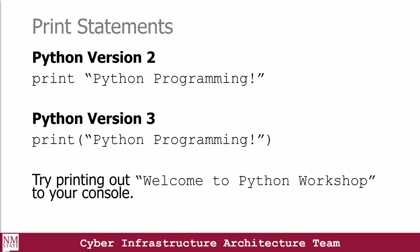Most of the time we want to write a message to the console. There are two ways of doing this. For Python version 2, you print a statement to the console using the print statement, a space, and a double-quoted string. For Python version 3, you use the print statement with your double-quoted string within parentheses. Currently, Python 2 has reached end of life as of January 2020, meaning it's no longer supported and its libraries are not compatible with Python version 3. So we stick to Python version 3.